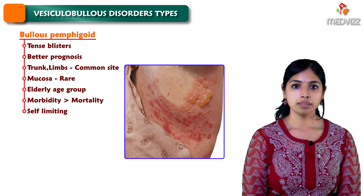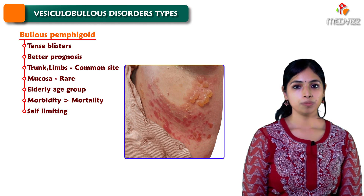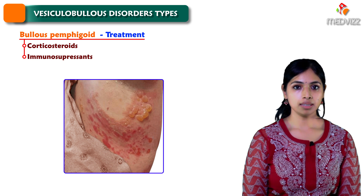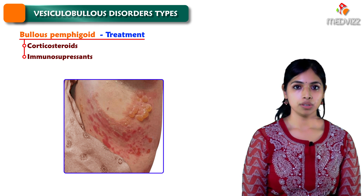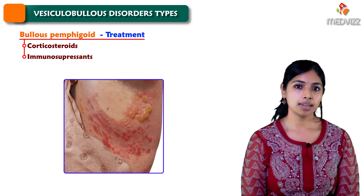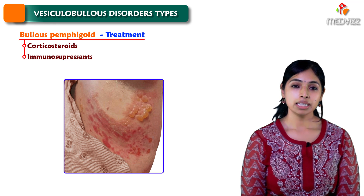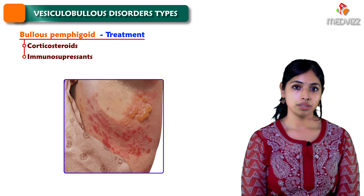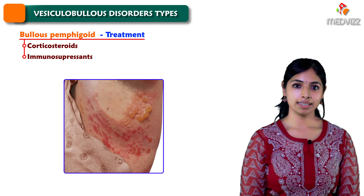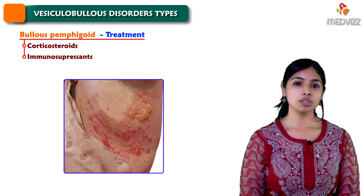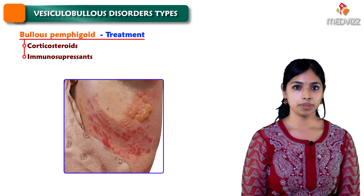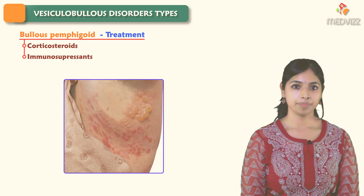Even in bullous pemphigoid we treat with corticosteroids and other immunosuppressants. When you have vesiculobullous disorders or any skin conditions with bubbles on the skin, it is better to visit your dermatologist to go through the necessary investigations, diagnose the condition properly, and take the appropriate treatment. Thank you.